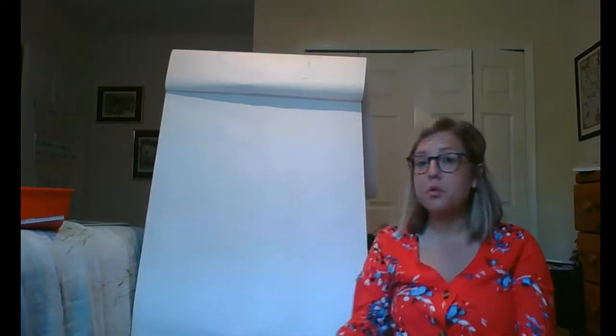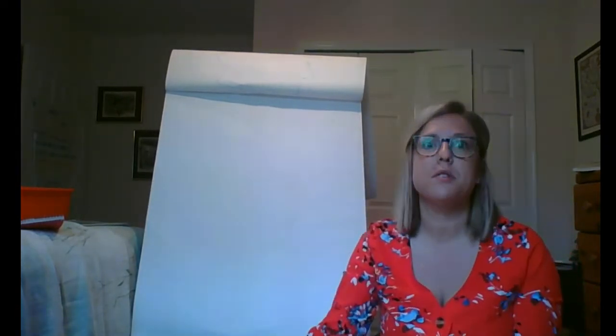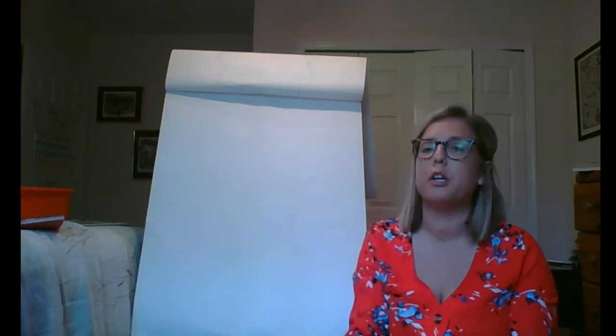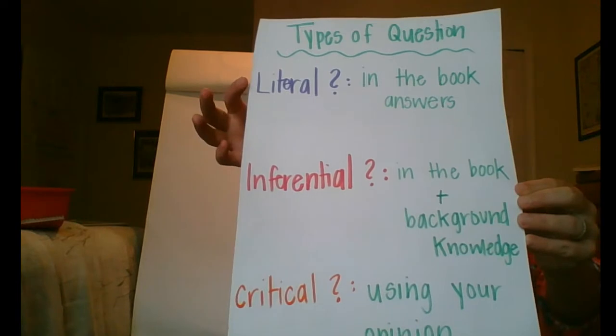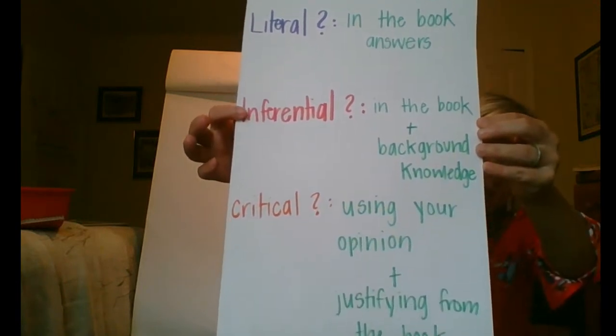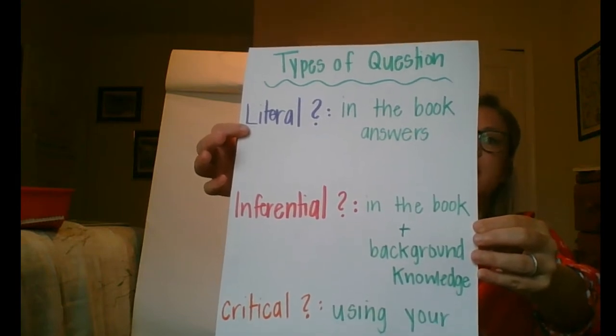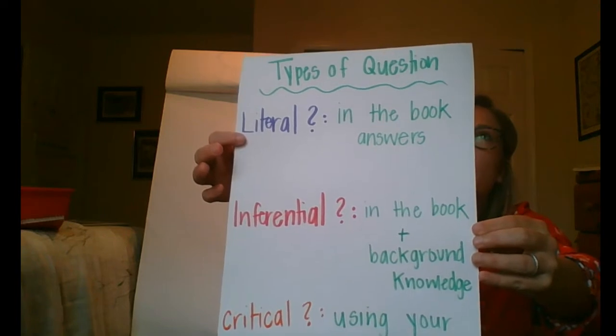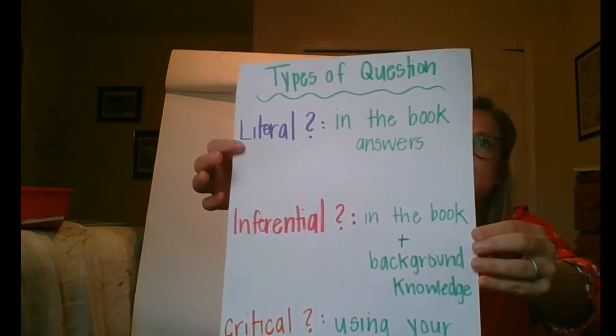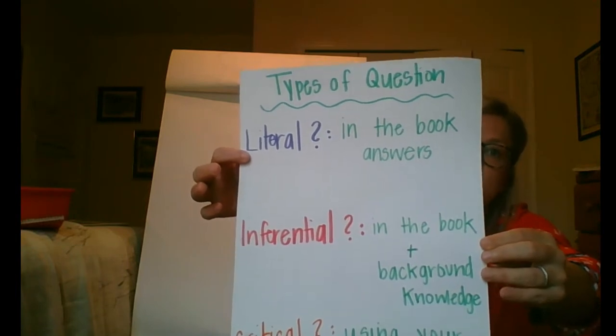We have learned this school year about three different types of questioning. I'm going to show you the poster, and I realize there's going to be lots of words on it, but we're going to go over everything. We have types of questions: literal, inferential, and critical. Literal questions are those questions that are in the book. For example, I would say, What color of coat was Little Red Riding Hood wearing in the story? And you would say, red.